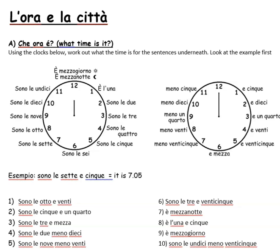Number three: sono le 3 e mezza — that is 3:30. Number four: sono le 2 meno 10 — that is 2 minus 10, so that's 1:50, ten to two. Number five: sono le 9 meno 20 — that's 9 minus 20, so 8:40 in digital time. Number six: sono le 3 e 25 — is 3:25.